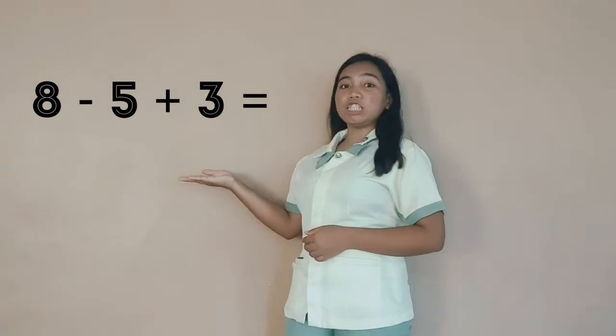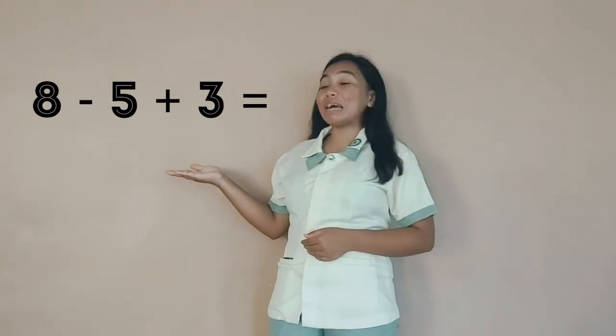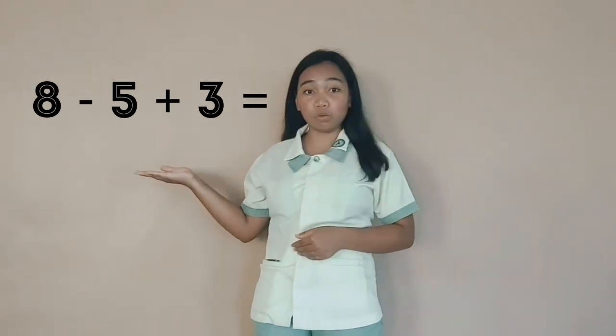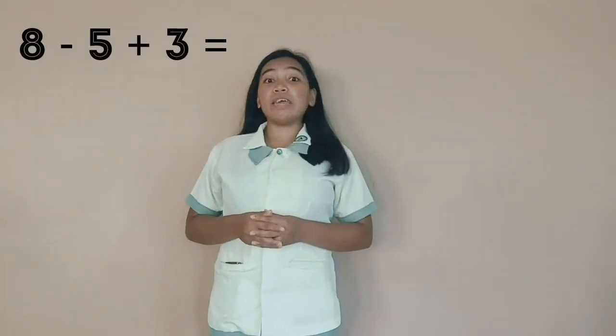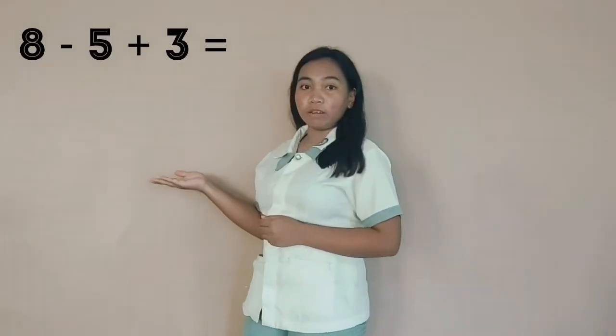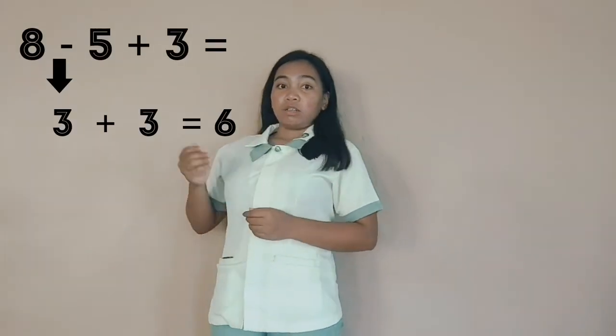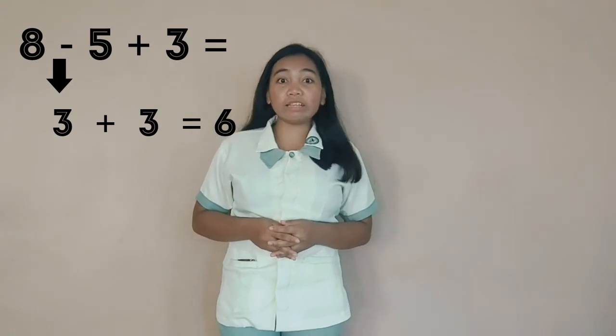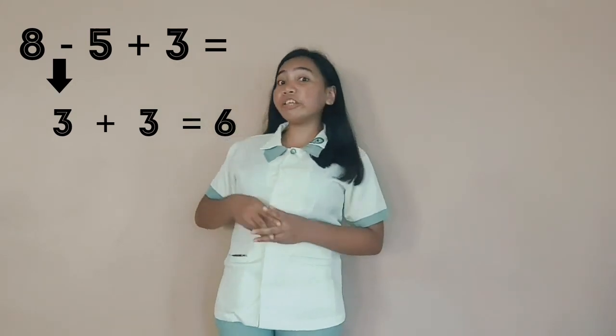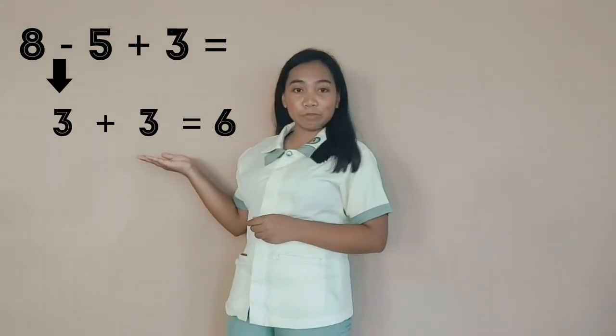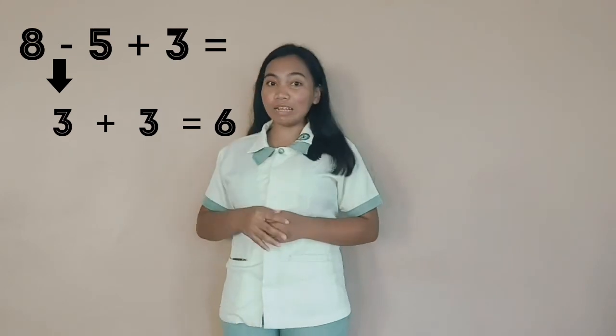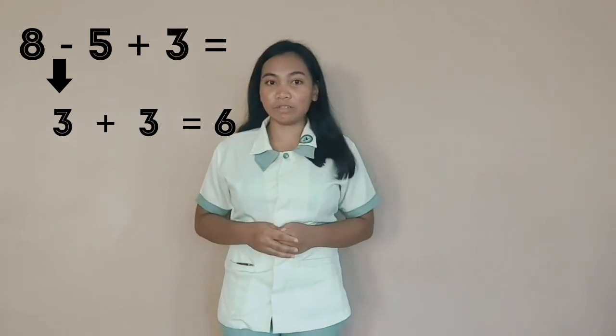For example, 8 minus 5 plus 3 is equal to... That's 8 minus 5 is equal to 3, and then I add the 3, which gets me 6 for the final answer. Remember, from left to right.